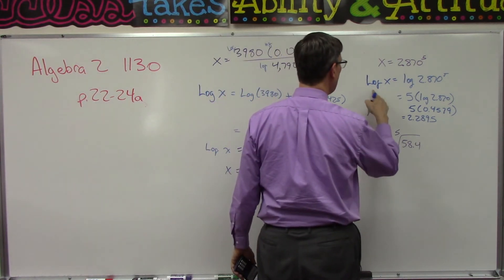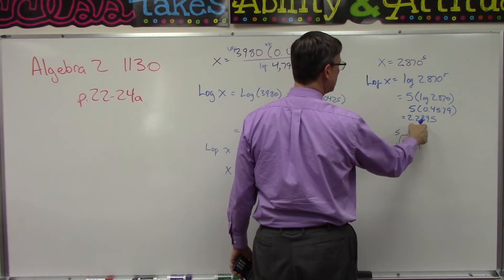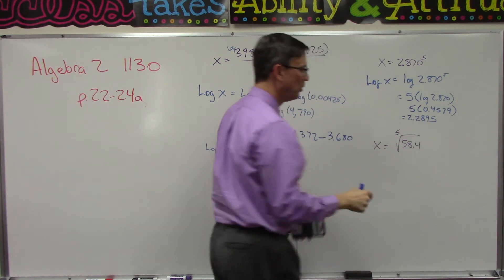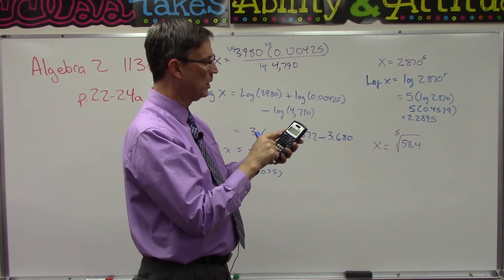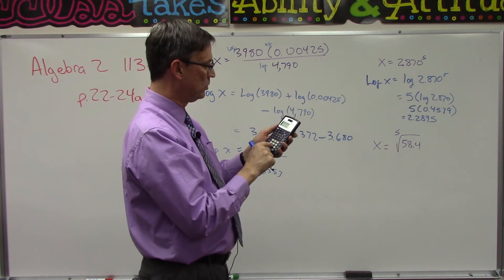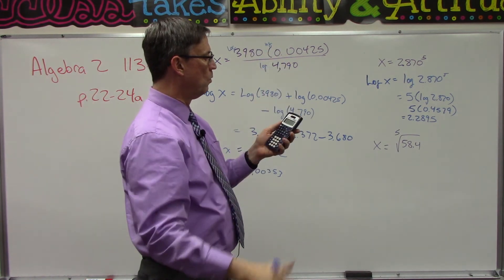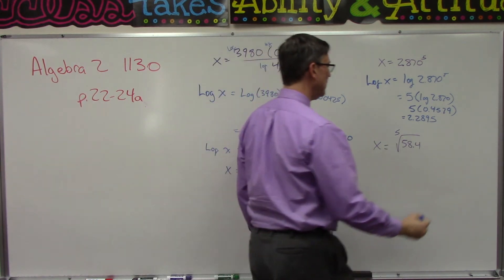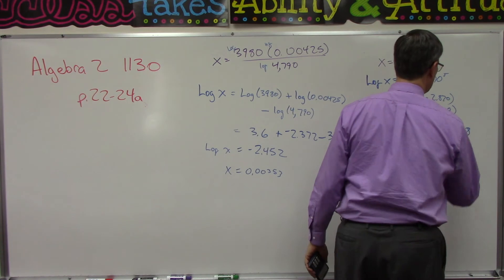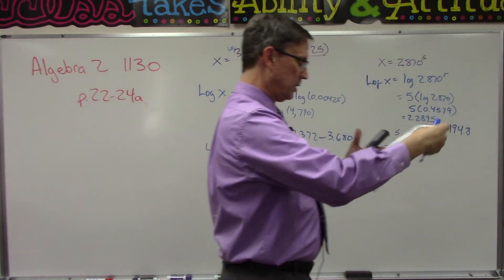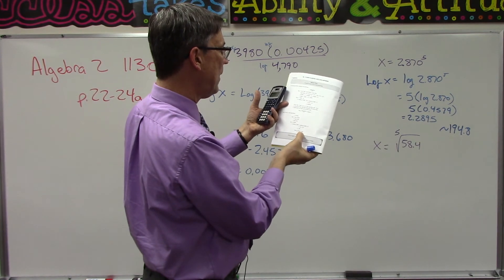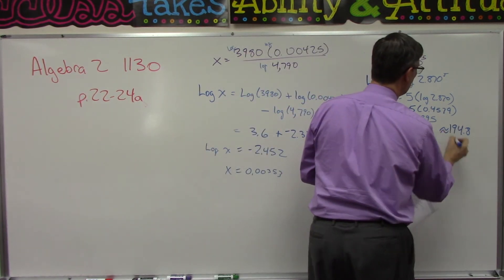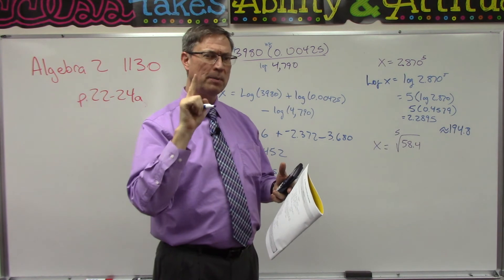Remember that is the log of x equals that. So to actually find x, which is what we're solving for, we have to do 10 raised to that exponent, or do the second function log—the antilog of 2.2895—194.8. Let's see what did they get? They have 195, so—and actually that wavy line, I just did one, I guess we should do two—the wavy lines means approximately. So they were approximately correct. We actually got a closer answer by using our calculator.